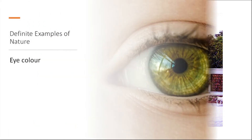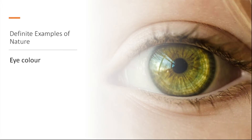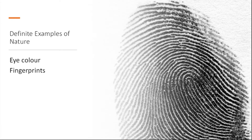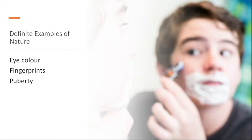Here are some examples of innate characteristics we have because of our nature. Eye colour would be one. Fingerprints would be another, but fingerprints are not the result of your genes — the wrinkling on your skin that creates your distinctive fingertips happens in the womb, so identical twins might not have identical fingerprints. Puberty is an example of maturation, where hormones are released, bringing about changes in your body and perhaps personality.